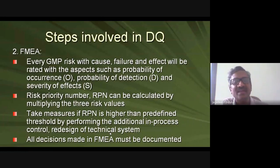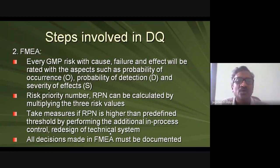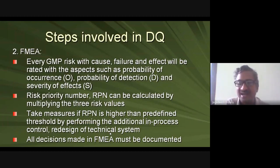All decisions made in the FMEA must be documented so that you purchase the right type of equipment for your factory and requirements. The next step is HACCP, which defines critical control points. The goal is to reduce the risk of product contamination — deciding whether to use disposable or washable equipment, cleaning validation, and whether to use barriers, separate rooms, or separate buildings to avoid cross-contamination.